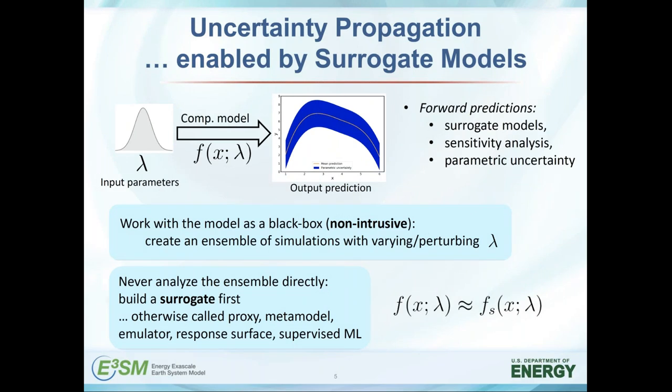The very first, most basic application of uncertainty quantification would be uncertainty propagation, where we have ranges of unknown physical input parameters given by a modeler, and the goal is to propagate those uncertain inputs to output predictions with uncertainty. This is a basic task of forward prediction, which comes along with building surrogates, performing proper sensitivity analysis, and looking into parameter uncertainty attribution. This methodology works with the model as a black box — non-intrusive — so all you need is an ensemble of simulations with varying input parameters lambda.